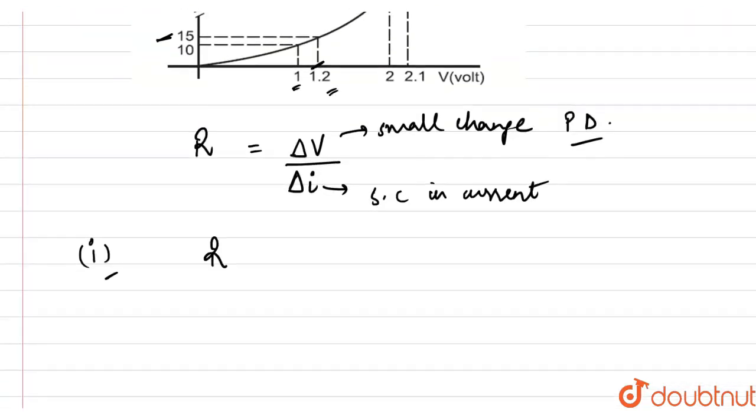So, our dynamic resistance for the first case is small change in potential difference, 1.2 minus 1 volt, divided by the corresponding small change in current, 15 minus 10. This comes out to be 0.2 volt divided by 5 milliampere, which equals 40 ohm.